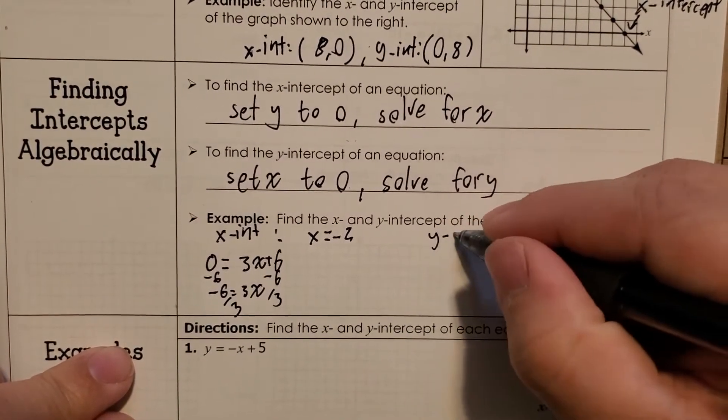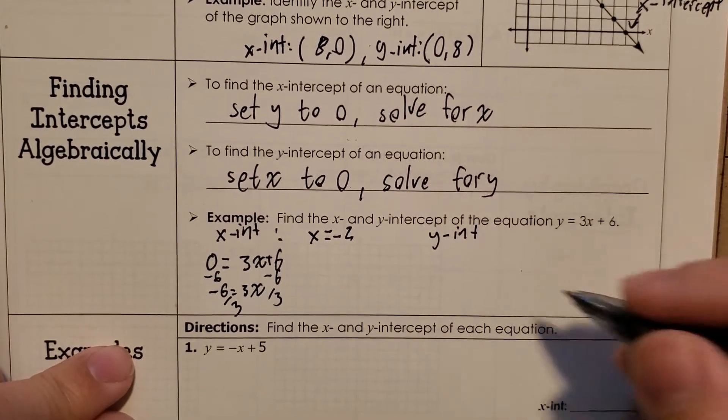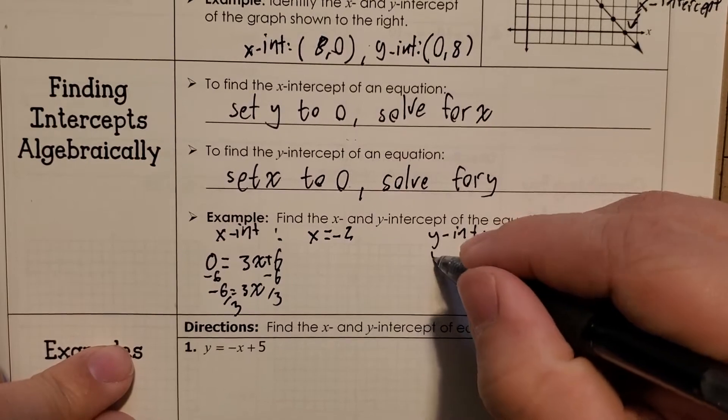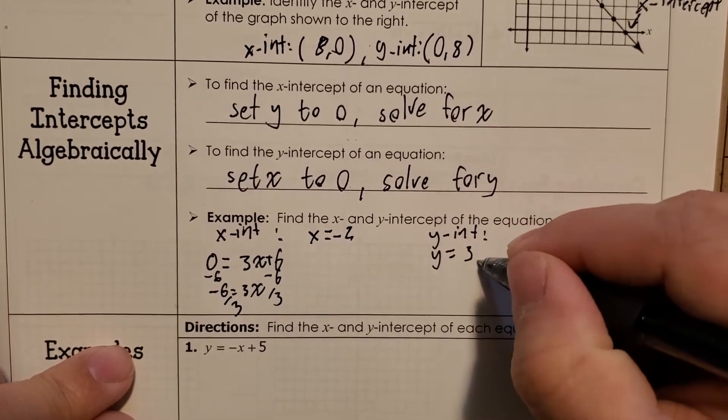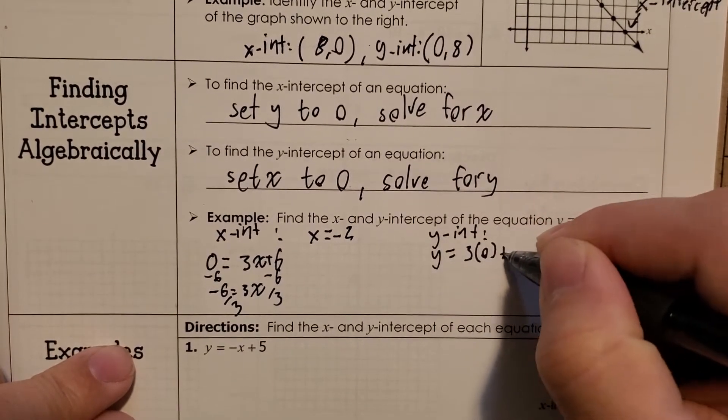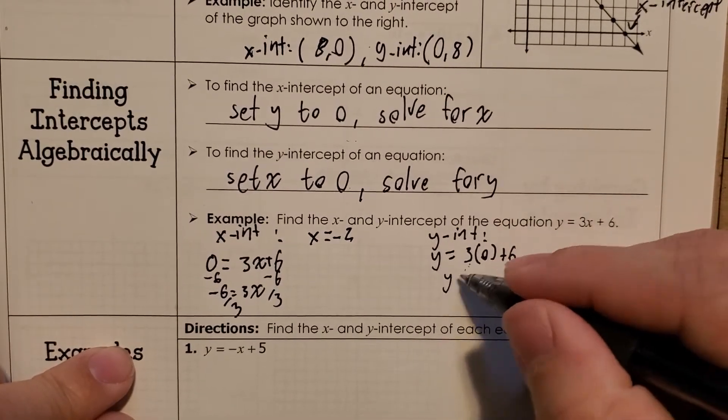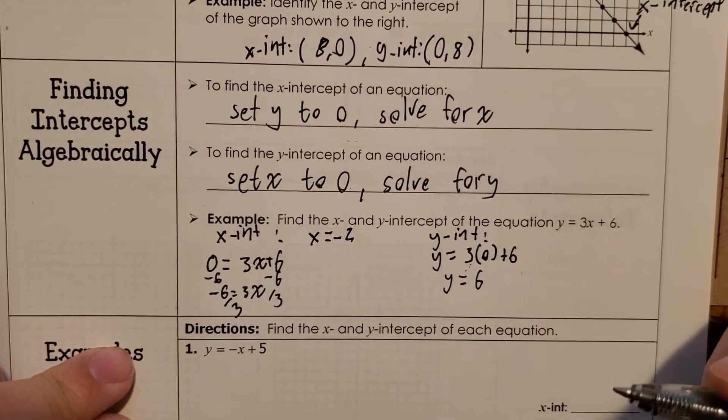And then we do the same for the y-intercept. This time we set x to 0, so we leave it as y equals 3 times 0 plus 6. 3 times 0 is 0, so we just get y equals 6. That's it.